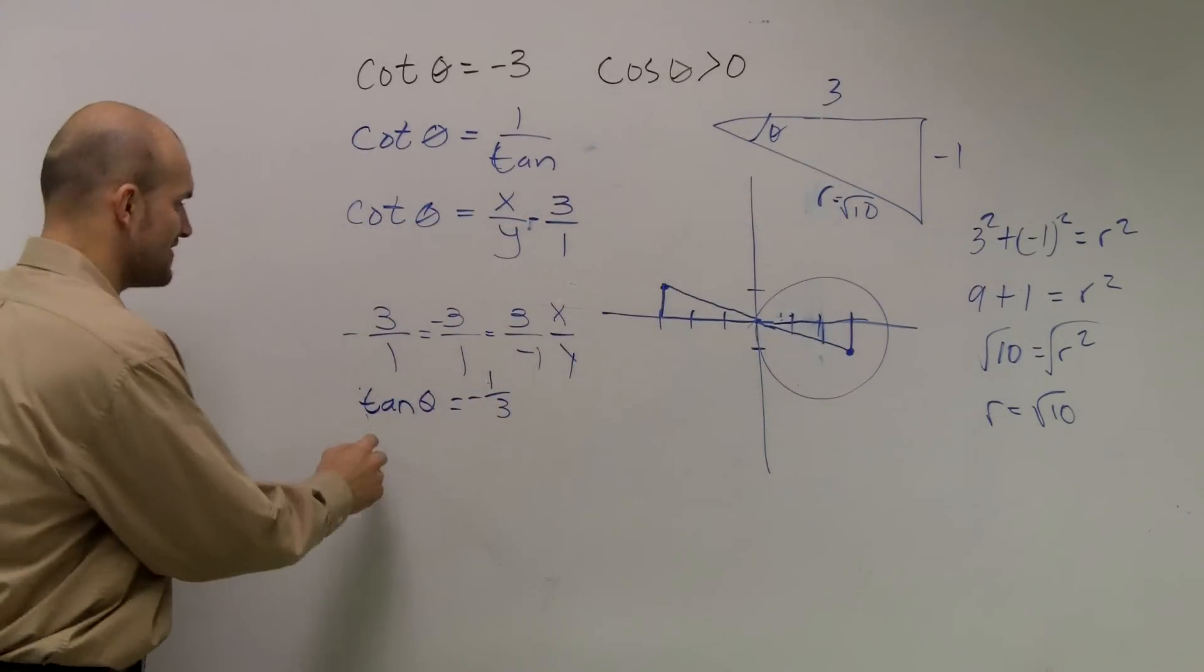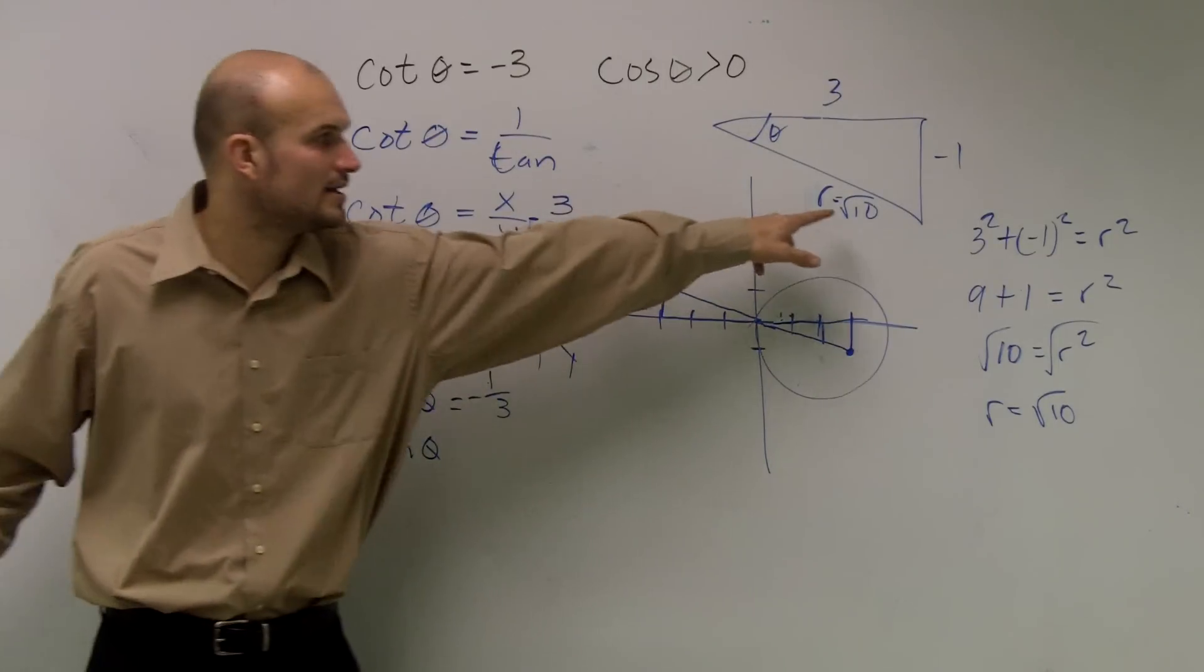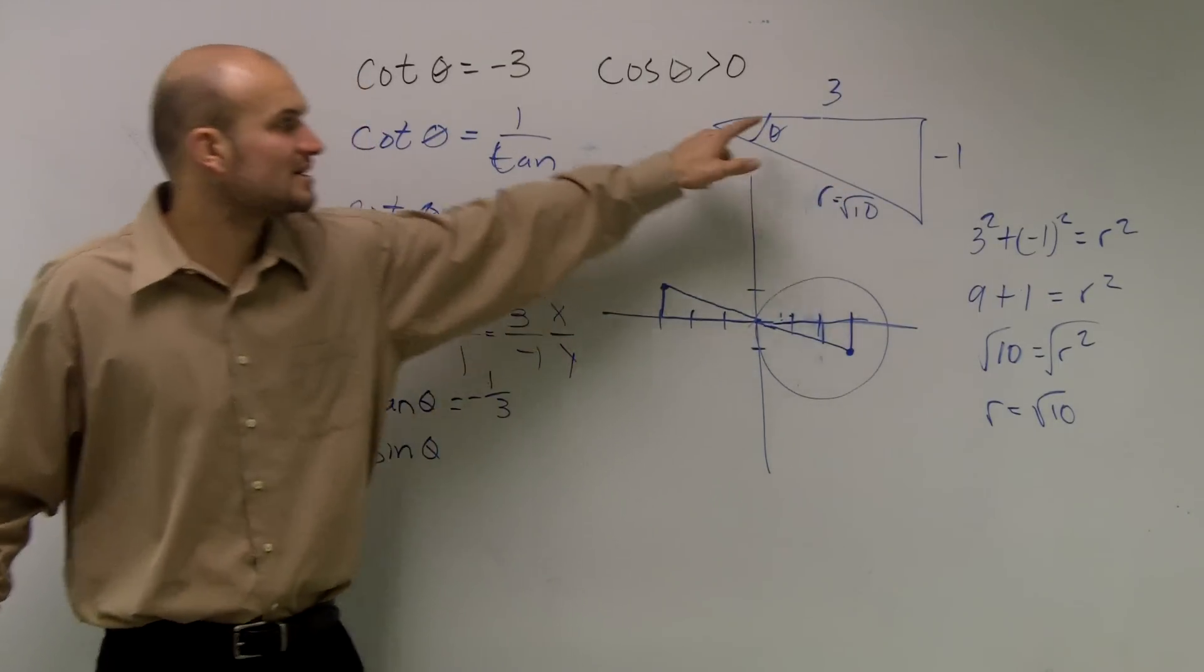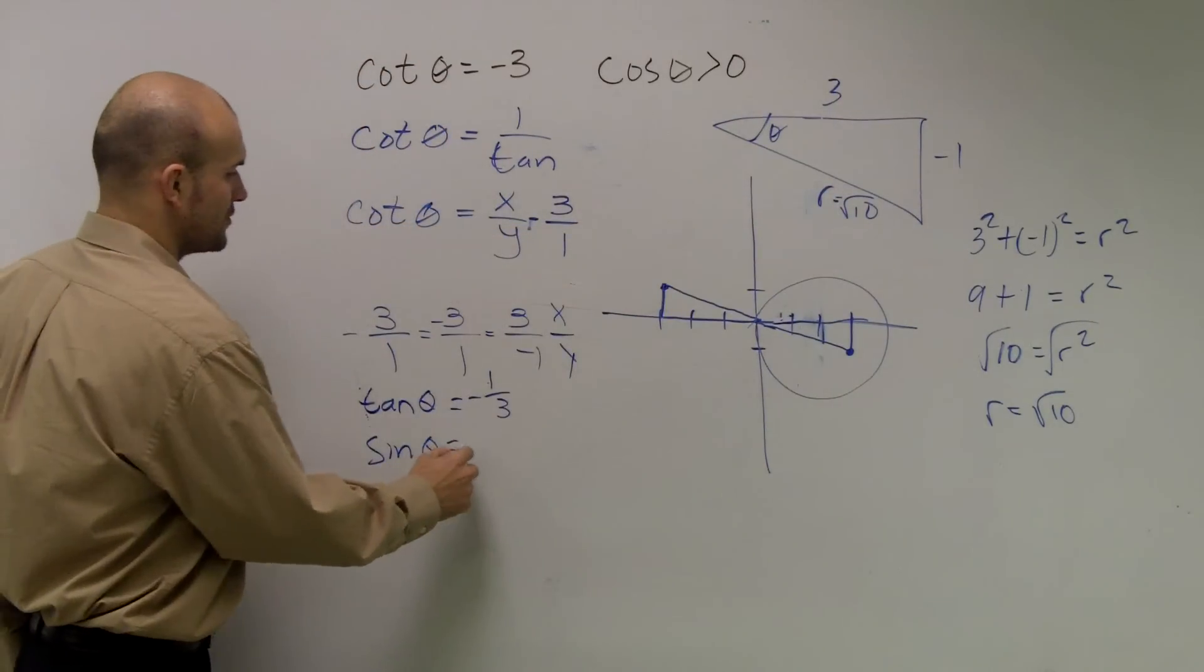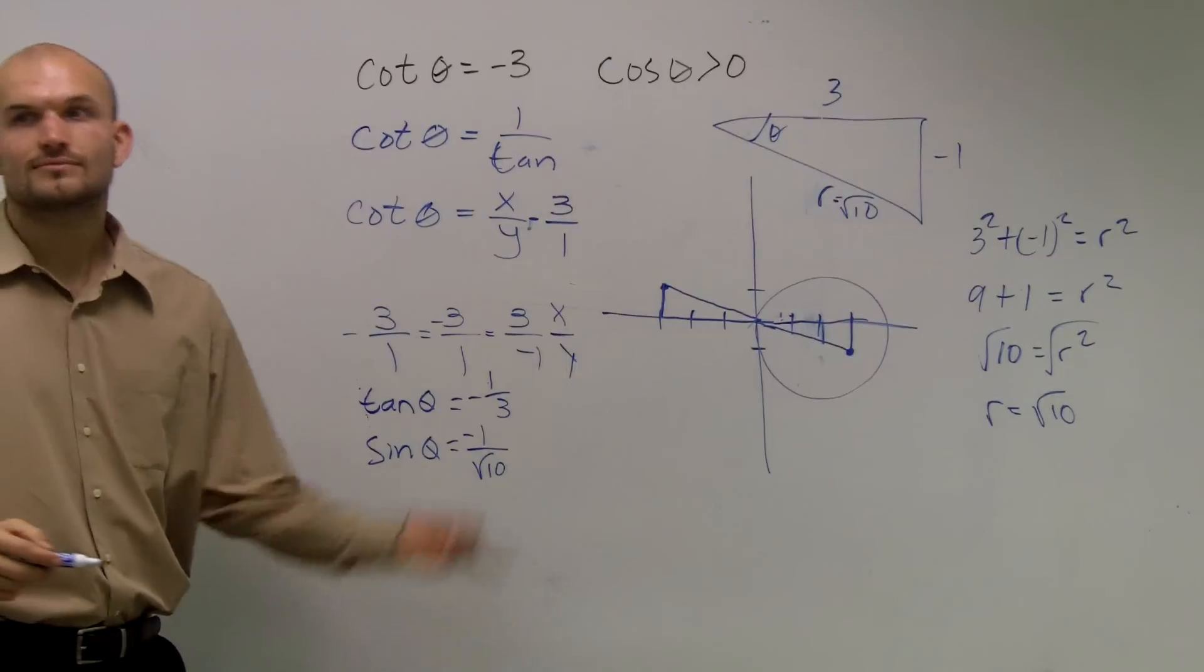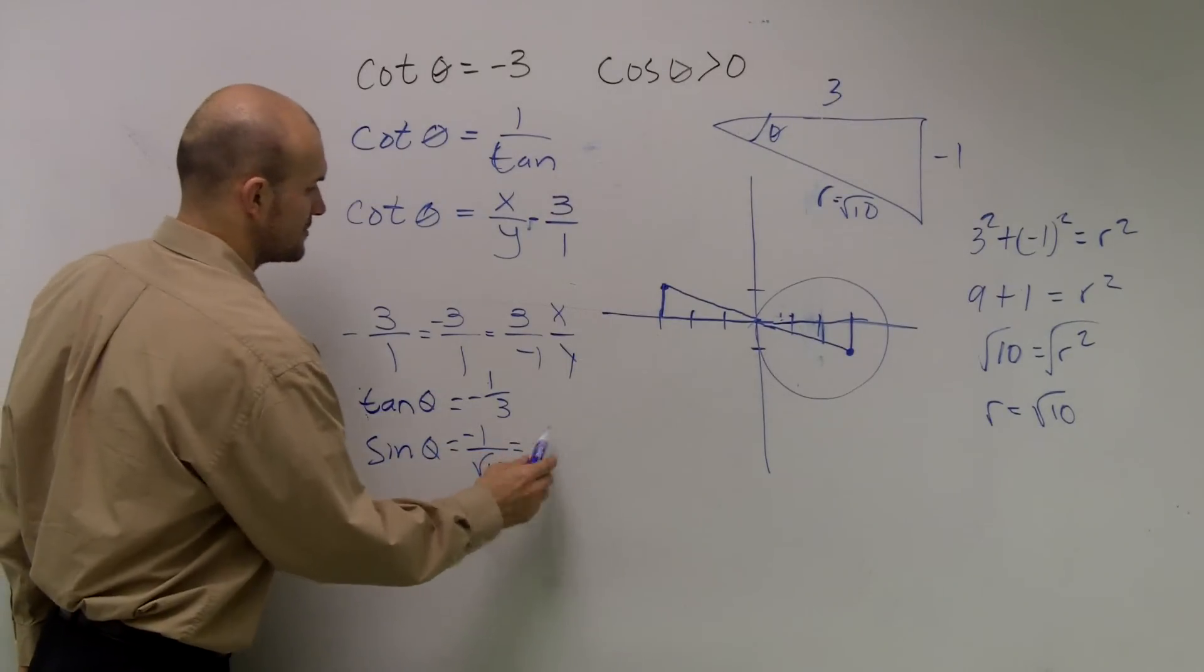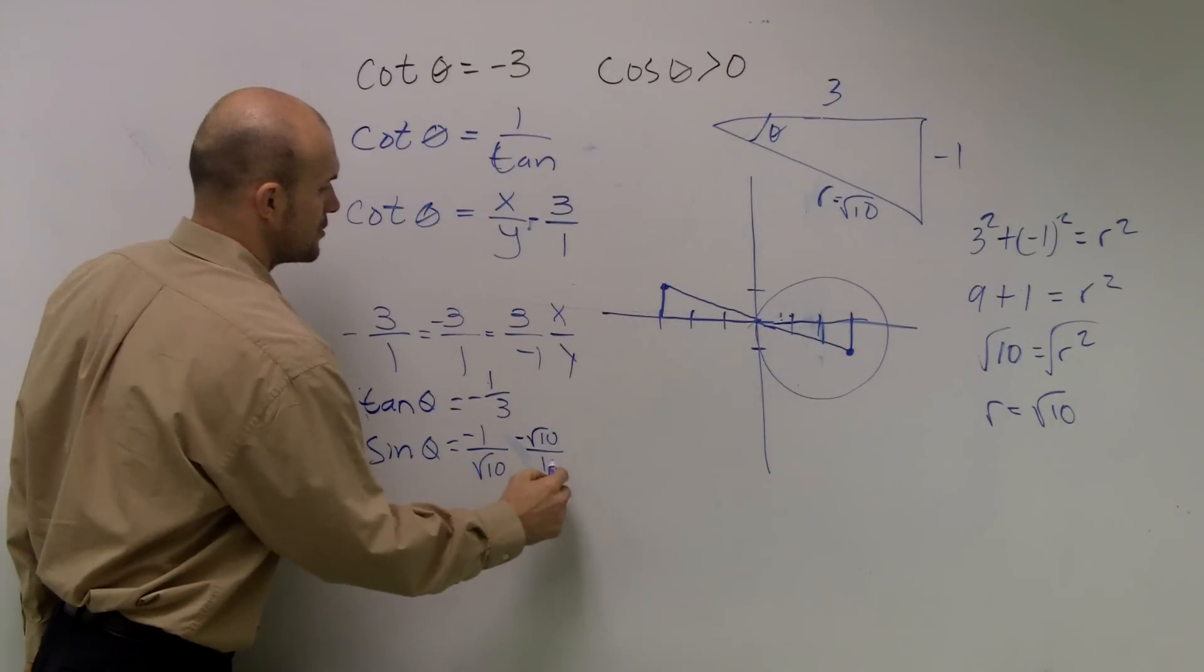So those are easy. However, to find sine of theta, we had to know what our hypotenuse was. Because sine is opposite over hypotenuse. So that's going to equal a negative 1 over radical 10. Rationalize the denominator. So you get a negative radical 10 over 10.